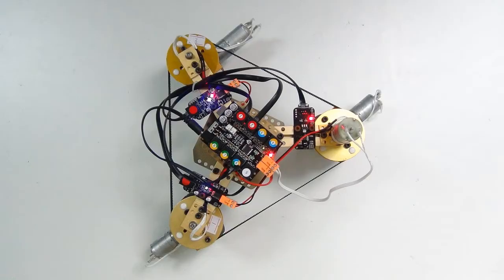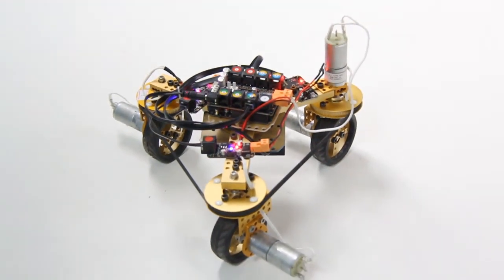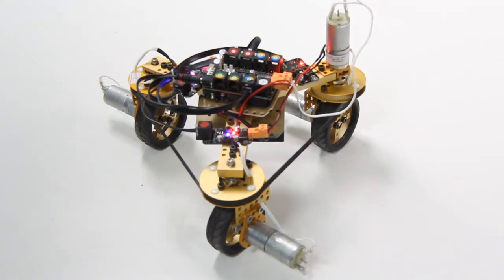The three wheels form regular triangle with each other 120 degrees. Three DC motors drive three wheels and control the direction of it.